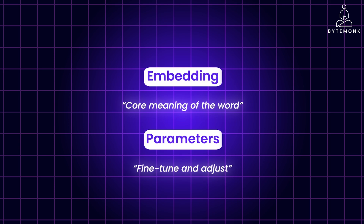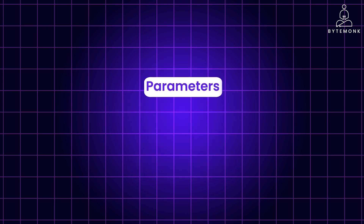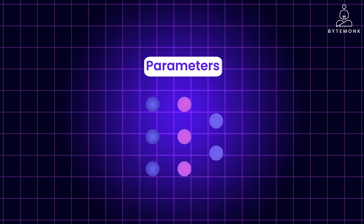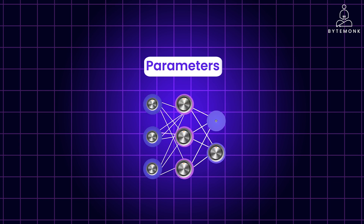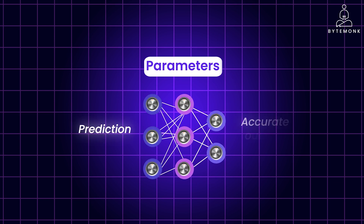As you can imagine, parameters are the backbone of LLMs, allowing them to learn from data and perform complex tasks. Parameters are the internal settings of a neural network that can be adjusted through training to better predict and generate accurate outputs.